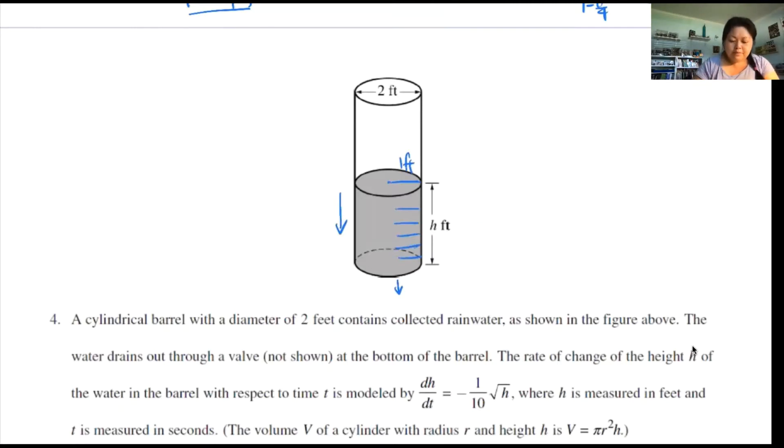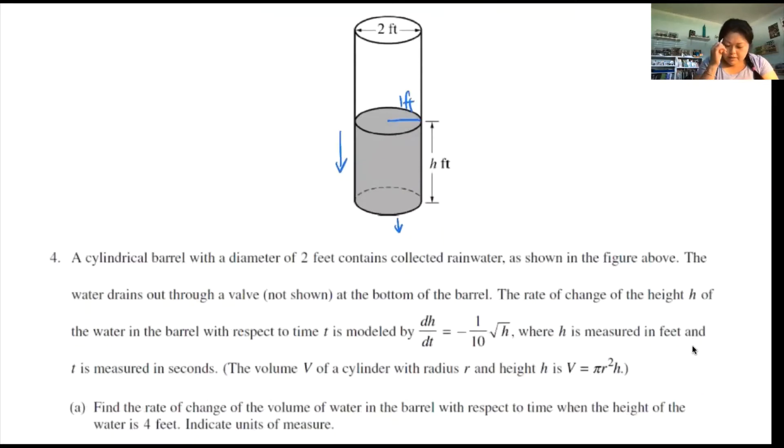The rate is modeled by dh/dt equals negative 1 over 10 root h, where h is measured in feet and t is measured in seconds. The volume of the cylinder is pi r squared times height. Find the rate of change of the volume in the barrel with respect to time when the height of the water is 4 feet. Indicate the unit of measure.